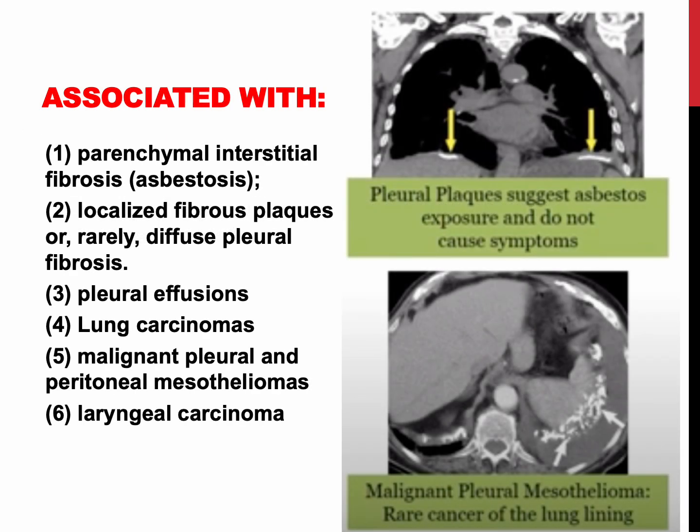On the basis of epidemiologic studies, occupational exposure to asbestos is linked to parenchymal interstitial fibrosis, which is called asbestosis; localized fibrous plaques or rarely diffuse fibrosis in the pleura; pleural effusions; lung carcinoma; malignant pleural and peritoneal mesothelioma; and laryngeal carcinoma.